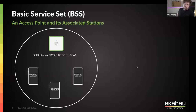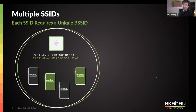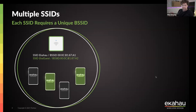When we talk about multiple SSIDs, we will still have one access point and probably the same clients or maybe different clients connecting to different SSIDs. Each SSID will be identified by a unique MAC address of the radio called the BSSID — the identifier of the BSS that we've just talked about.